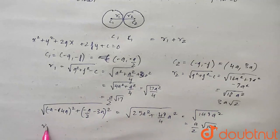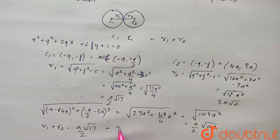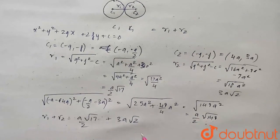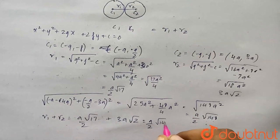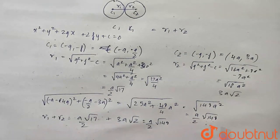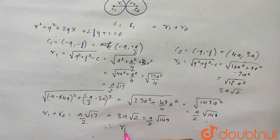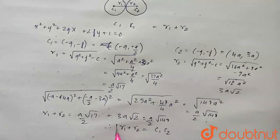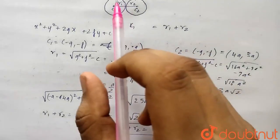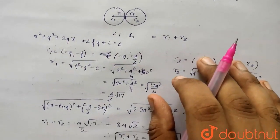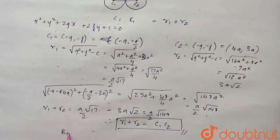Now we find R1 plus R2, which equals a root 17 upon 2 plus 3a root 2, and this equals a by 2 root 149. Therefore R1 plus R2 equals C1C2, which is a by 2 root 149. Hence we have proved that R1 plus R2 equals C1C2, and therefore both circles touch each other.